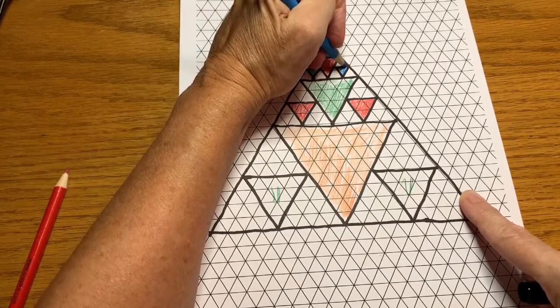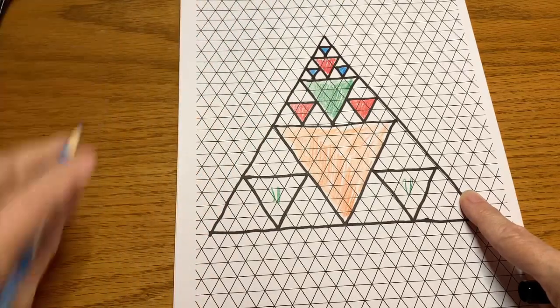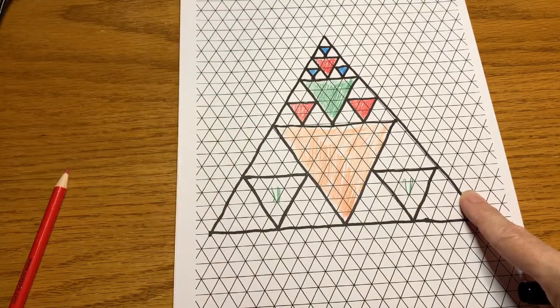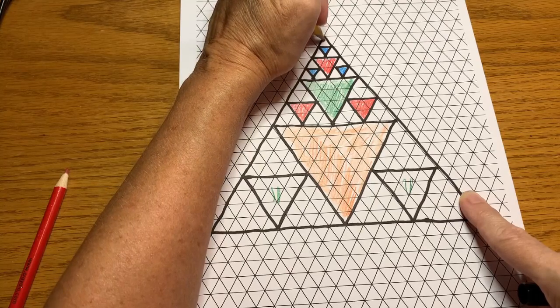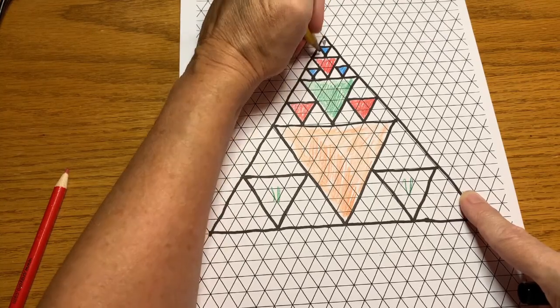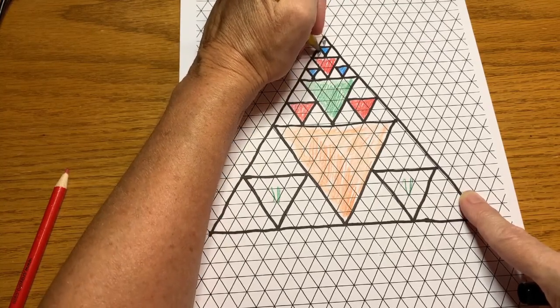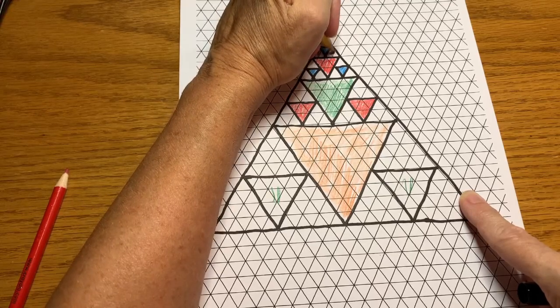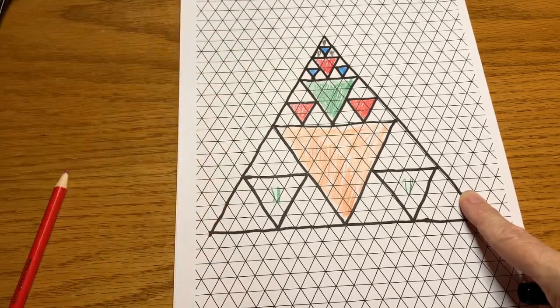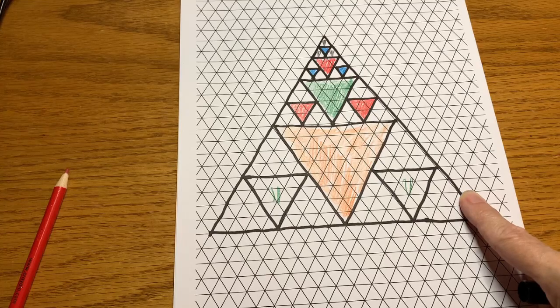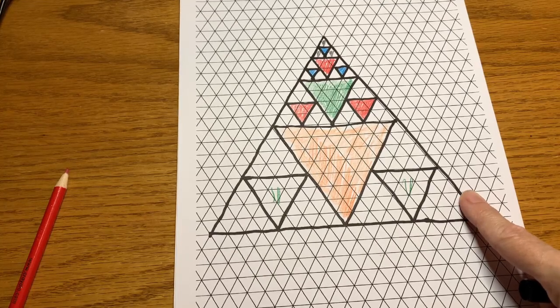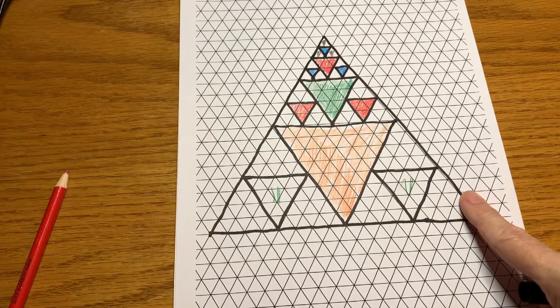Now you can stop here because we're out of lines on the paper, or you can go ahead and take it another step and just draw in your own triangles in these empty spots and see how far you can go. So this is the Sierpinski Triangle. It is an example of fractal art. I can't wait to see what you create.